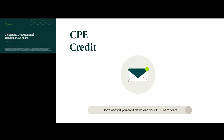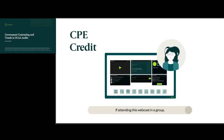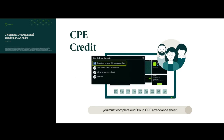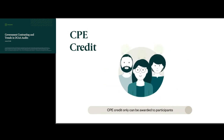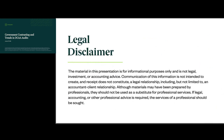Don't worry if you can't download your CPE certificate today — we'll email you a copy in two weeks. If attending this webcast in a group, you must complete our group CPE attendance sheet, have all group members sign it, and send only one sheet per group. CPE credit can only be awarded to participants registered as themselves and isn't available for the on-demand version. This presentation is not legal, investment, or accounting advice; we encourage you to seek counsel of a professional service provider.